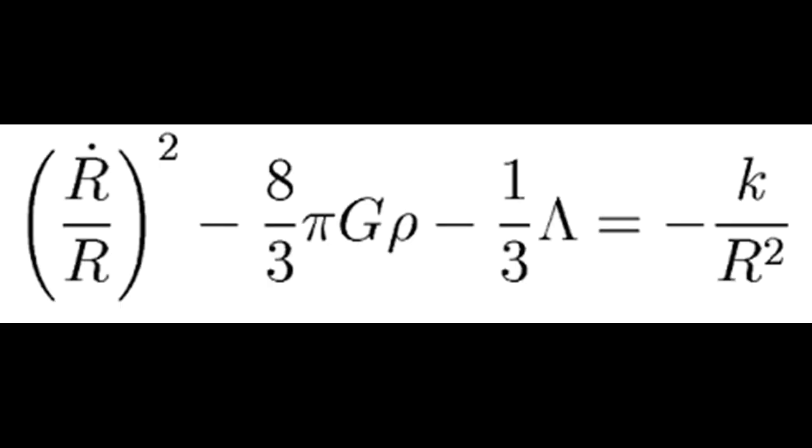The concept of an expanding universe was first proposed by Albert Einstein in his general theory of relativity, through the introduction of the cosmological constant, lambda, in his equation to counteract the effect of gravity.